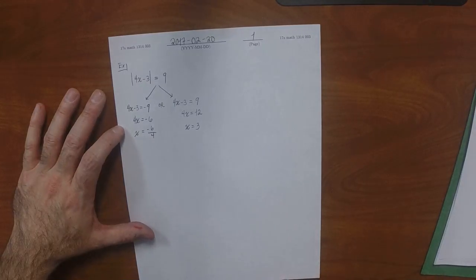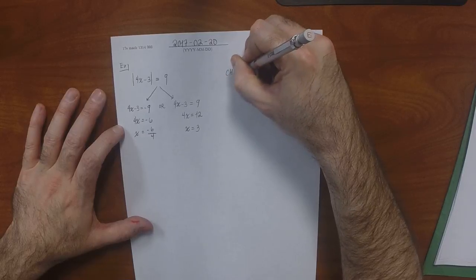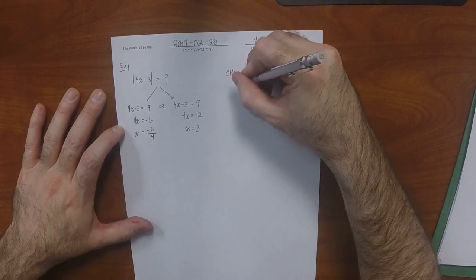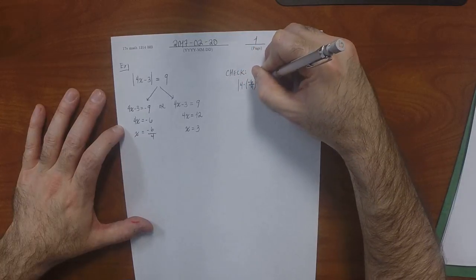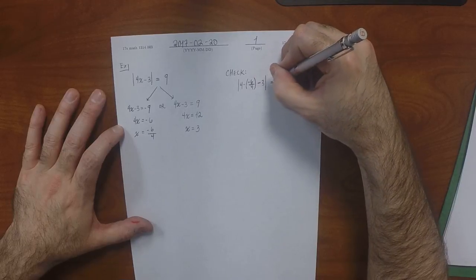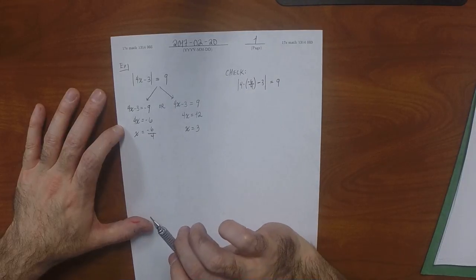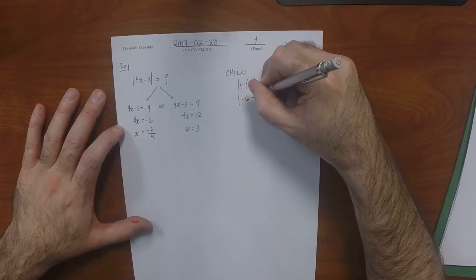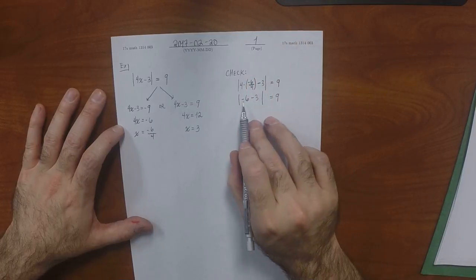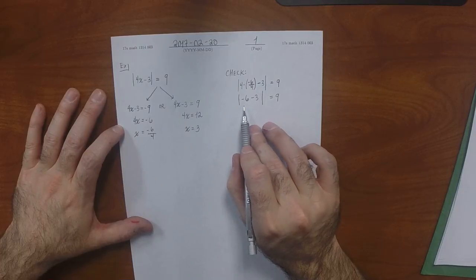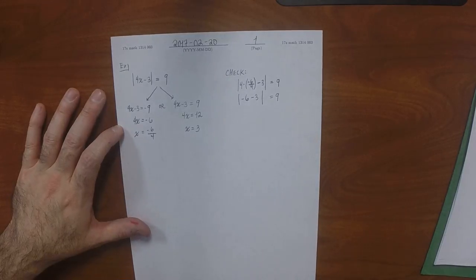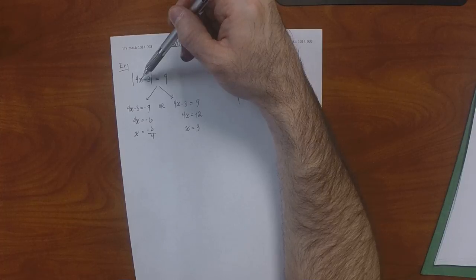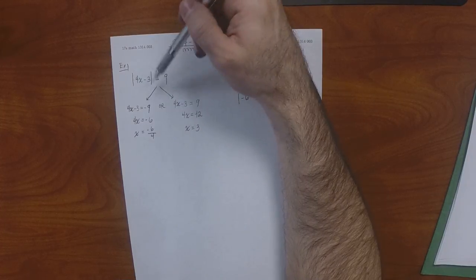Let's do a quick check. If we plug in negative 6 fourths: 4 times negative 6 over 4 is negative 6, minus 3 is negative 9, and the absolute value of negative 9 is 9. ✓ For x equals 3: 4 times 3 is 12, minus 3 is 9, absolute value of which is 9. ✓